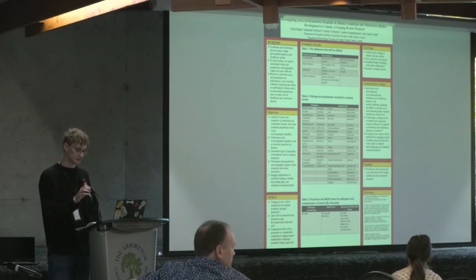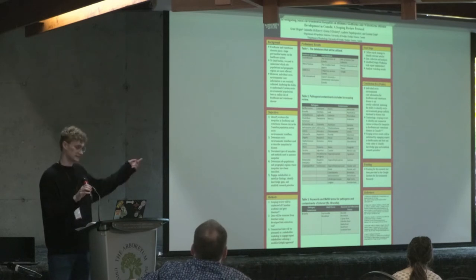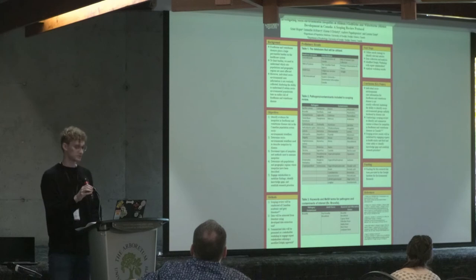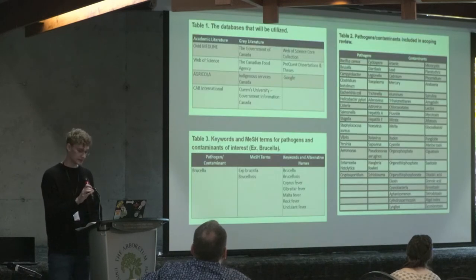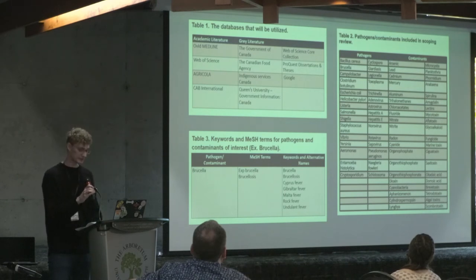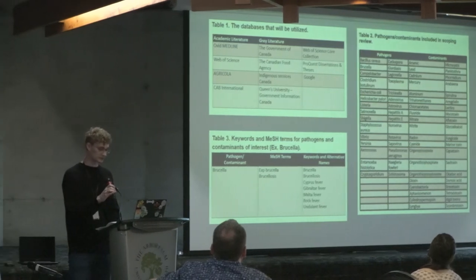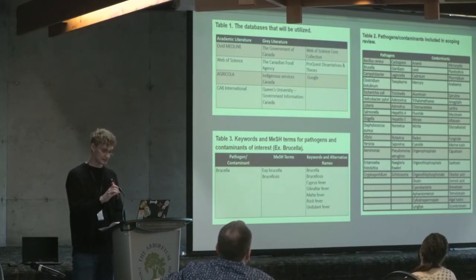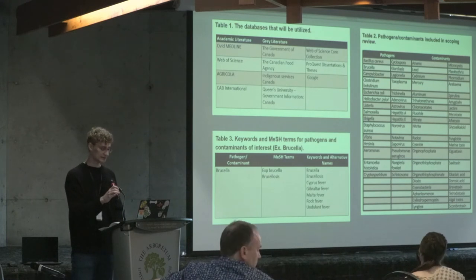I'm addressing this gap in knowledge by conducting a scoping review to gather evidence of foodborne and waterborne disease inequities in Canada. I will then present my findings to a group of stakeholders in health equity and food and water safety using a modified Delphi approach to help engage them in how to mobilize our findings, identify research gaps, and establish future research priorities. So far we have developed the detailed scoping review protocol, which includes a list of databases for both academic and grey literature. One of the strengths of our scoping review is the number of pathogens and contaminants included, developed with input from the Public Health Agency of Canada and Health Canada experts.